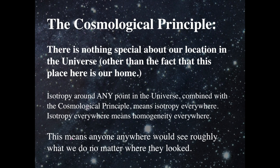We're going to utilize an incredibly important principle called the cosmological principle — that there's nothing special about our location in the universe, other than that it's where we call home. If we see that everything is roughly the same in every direction — not the exact same galaxies, but the same kinds of things distributed in the same ways — that's isotropy. If you combine that with the idea that the laws of physics are the same everywhere, then isotropy means isotropy everywhere. And if you have isotropy everywhere, then you have homogeneity everywhere — it looks the same everywhere, made of the same stuff. No matter where you are, you're going to see exactly the same thing.